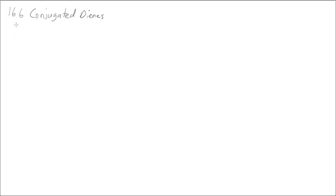Section 16.6 refers to the stereochemistry of conjugated dienes. If I have a conjugated diene, I need to look at the stereochemistry of each alkene individually. There are several possibilities. This alkene is E and this one is E, so I can have an EE, or trans-trans, configuration.